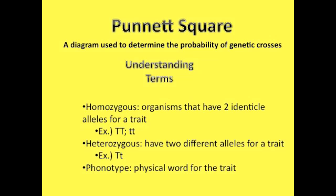The Punnett square is a tool designed to organize our traits and to predict the probability of genetic crosses. Homozygous sets have two identical alleles for a trait. For example, if a capital T represents being tall and a lowercase t represents being short, if the Punnett square determines the offspring will be TT or tt, it is known as homozygous, because both alleles are either capitalized or lowercased.